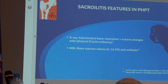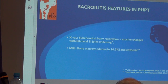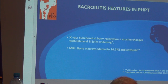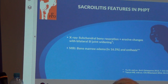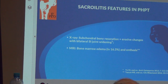The next characteristic feature of hyperparathyroidism is sacroiliitis. The characteristic feature is subchondral bone absorption with erosive changes and bilateral sacroiliac joint widening. On MRI, we see bone marrow edema in 60% of cases and enthesitis.